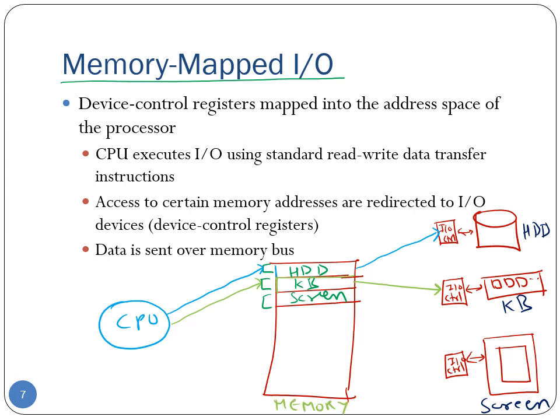When the CPU writes into these memory-mapped addresses, it uses the usual load-word or store-word instructions for reading and writing into memory. With memory-mapped I/O, you do not need the special I/O instructions like 'inb' or 'outb' that we discussed earlier.